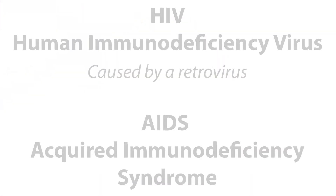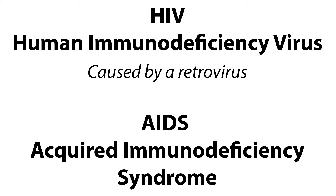Welcome to this video tutorial on AIDS infections and malignancies. Human immunodeficiency virus, or HIV infection, is an acquired infection that causes severe immune dysfunction. HIV infection causes the person to be unusually susceptible to other life-threatening infections and malignancies. HIV is caused by a retrovirus that in its most serious form results in acquired immunodeficiency syndrome, or AIDS.